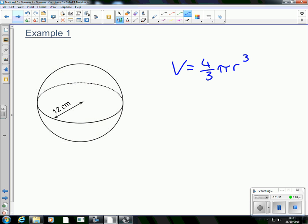It's going to be 4 thirds multiplied by pi r cubed. Now here, your radius is 12, so all we're doing is substituting 12 in to our equation. So it's 4 thirds multiplied by pi multiplied by 12 cubed.